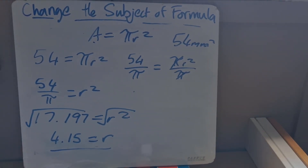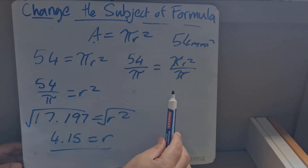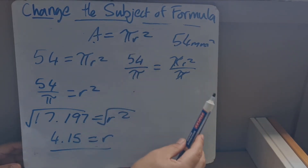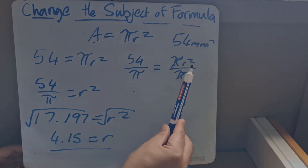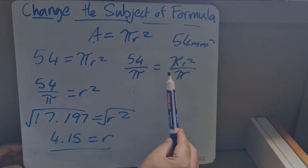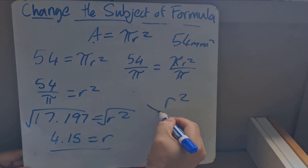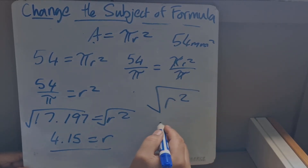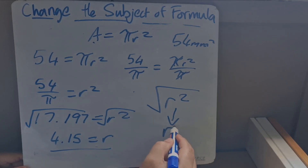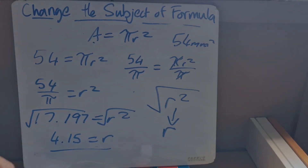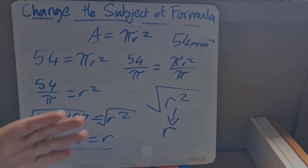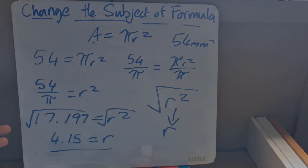So you can see what is basically happening: we divide by pi to get pi out of the equation so we can isolate r squared, and then we use the square root to bring it down to just r. Whatever we do to one side we have to do to the other side.